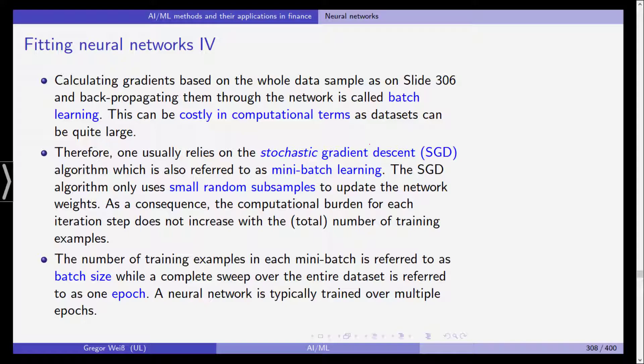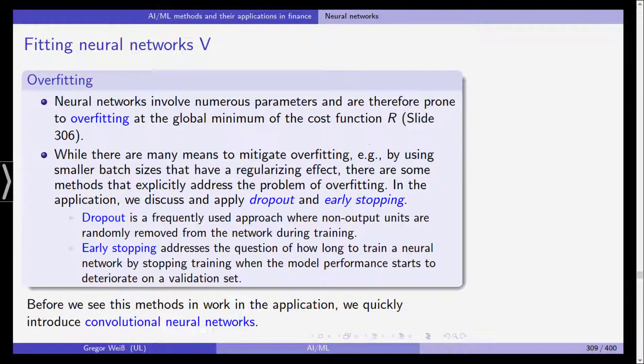The number of training examples in each mini-batch is referred to as the batch size, while a complete sweep over the entire data sample of N observations is referred to as one epoch. And a neural network is typically trained over multiple epochs. So you can see with this huge number of parameters and the need to calculate the gradient in each iteration to minimize our cost function, training a neural network with a larger data set usually requires a lot of time.